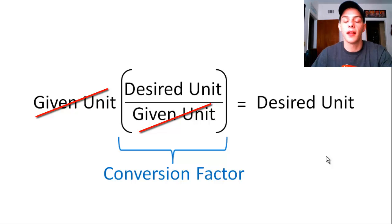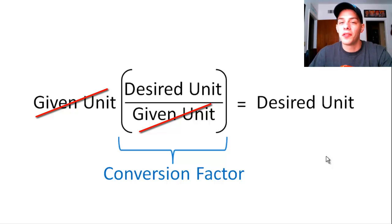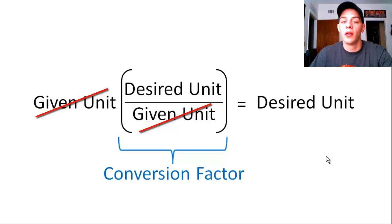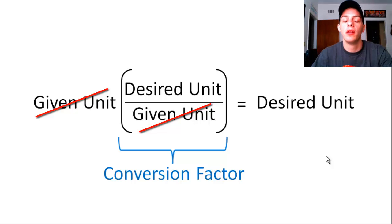That's pretty much all there is to conversion factors. A lot of people tend to make this more complicated than it is. A lot of people throw around the term 'dimensional analysis' — I really hate that term because it makes it seem so much more complicated than it really is. It really is just simple arithmetic. If you practice them, have clean handwriting, and everything cancels out the way it should, then you'll be fine.